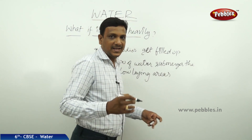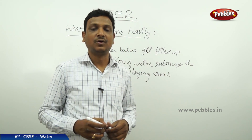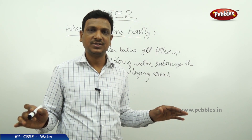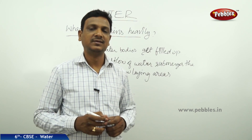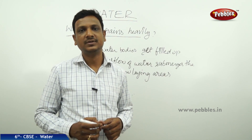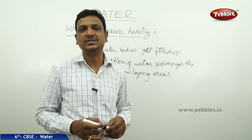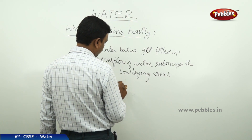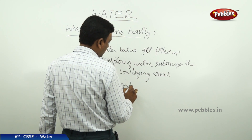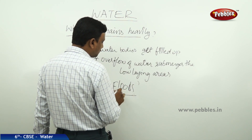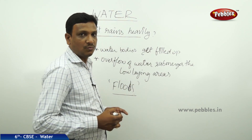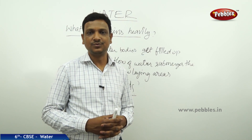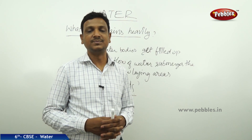Low-lying areas are submerged. Crops are submerged, animals are submerged, leading to death and destruction of crops, damage of houses. This is called floods. When it rains heavily, overflow of water and stagnation of water leads to floods, because of heavy rainfall.